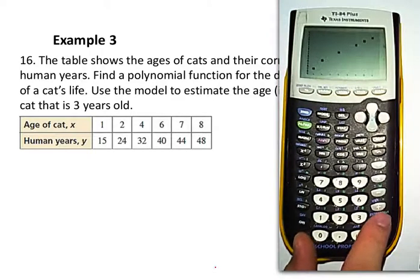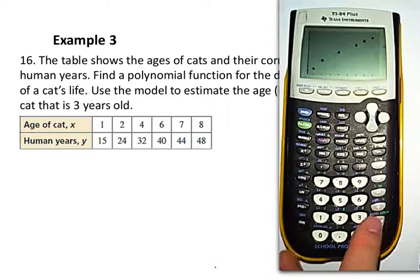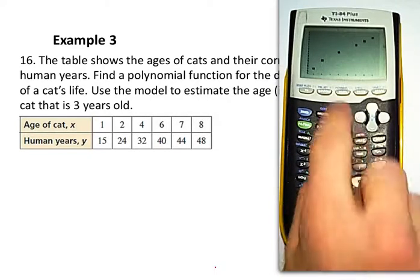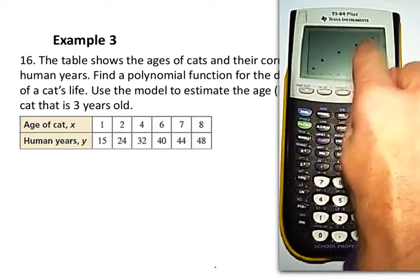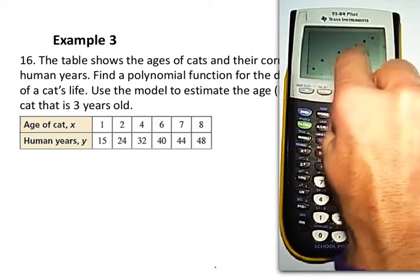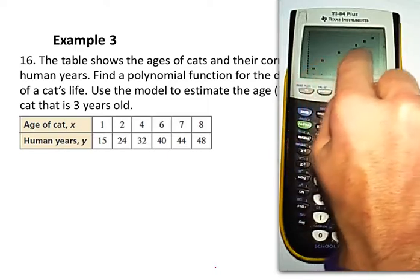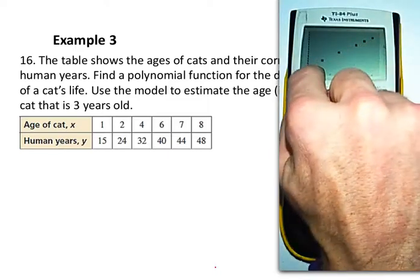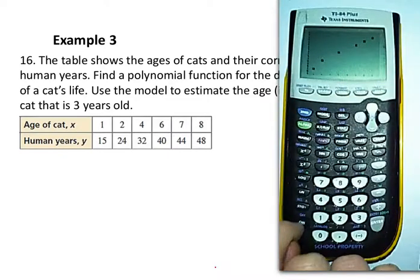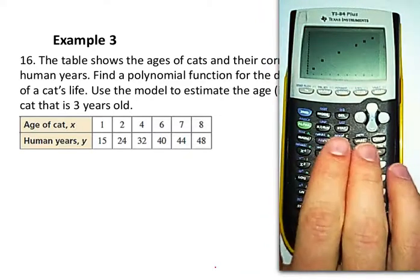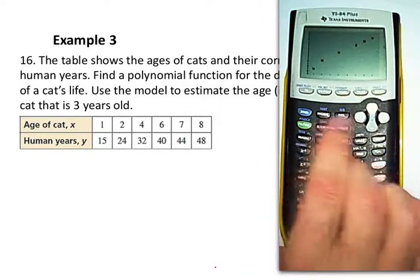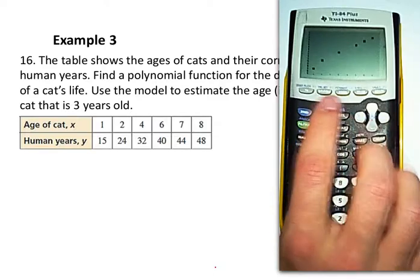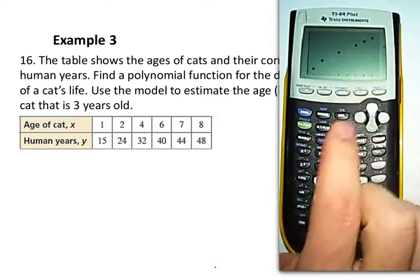So it's got those points plotted already, but I'm not going to be able to see them all. Just because if you look at the numbers in that table, they go way beyond what a typical screen shows. So there's a nice feature, zoom. And then if we go down, I think it's option nine is zoom stat. That will automatically fit the window to include all of our data points. So I'm going to go ahead and hit enter there.